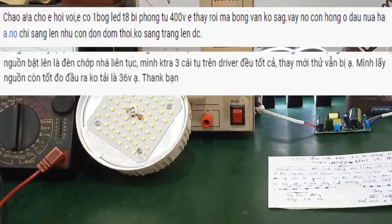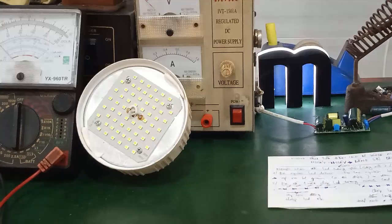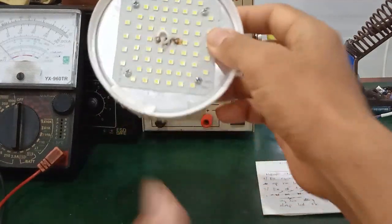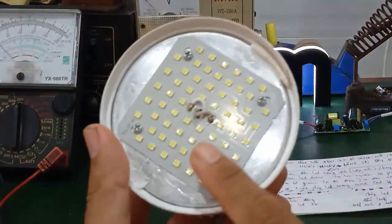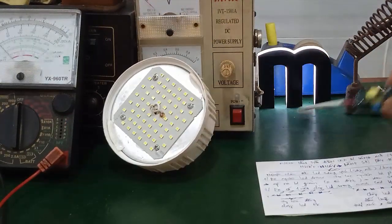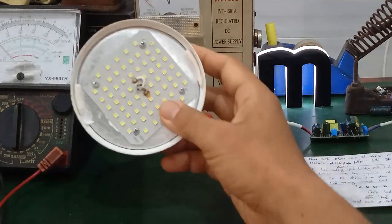Xin chào các bạn, trong video này mình sẽ hướng dẫn cách sửa đèn LED bị sáng mờ hoặc nhấp nháy bằng một sợi dây di động. Như các bạn đã biết, một cái đèn LED được cấu tạo từ một cái vỉ LED và một cái bộ nguồn LED driver để cung cấp nguồn cho vỉ LED để nó sáng.